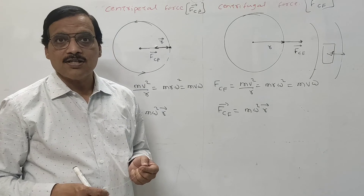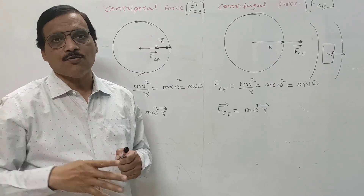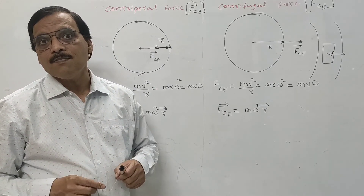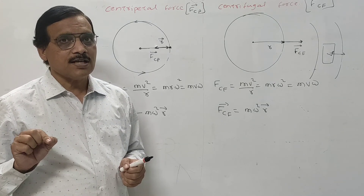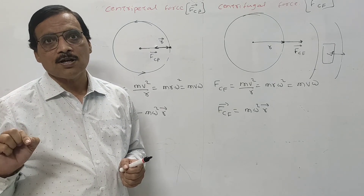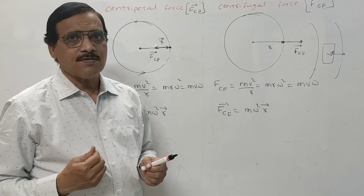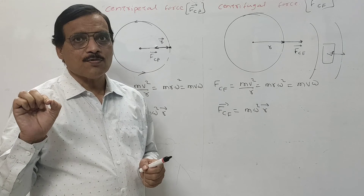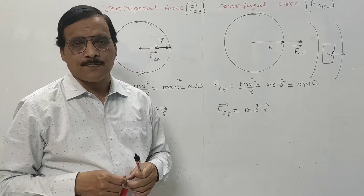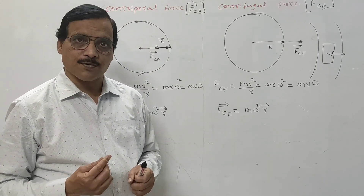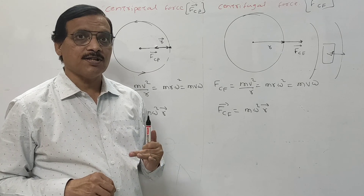In this first video, we have studied the basic topics of circular motion from the 11th standard curriculum. We covered: terms used in circular motion — radius vector, angular displacement, angular velocity, angular acceleration; relation between V and omega; period of circular motion; frequency of circular motion; and the difference between centripetal force and centrifugal force.